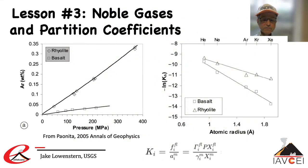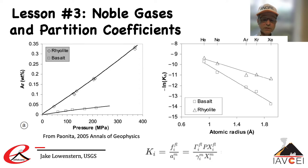Now let's talk about other volatiles. The simplest ones are the noble gases and diatomic molecules like nitrogen, that don't react significantly with the melt, at least at low pressure. Instead, they dissolve within holes in the silicate melt structure. In the diagram on the left, you can see that argon is more soluble in rhyolitic melt than in basaltic melt. By comparing plots from earlier slides, you can also see that for rhyolite, the solubility of argon and CO2 are comparable. In contrast, CO2 is generally more soluble in basalts than argon.